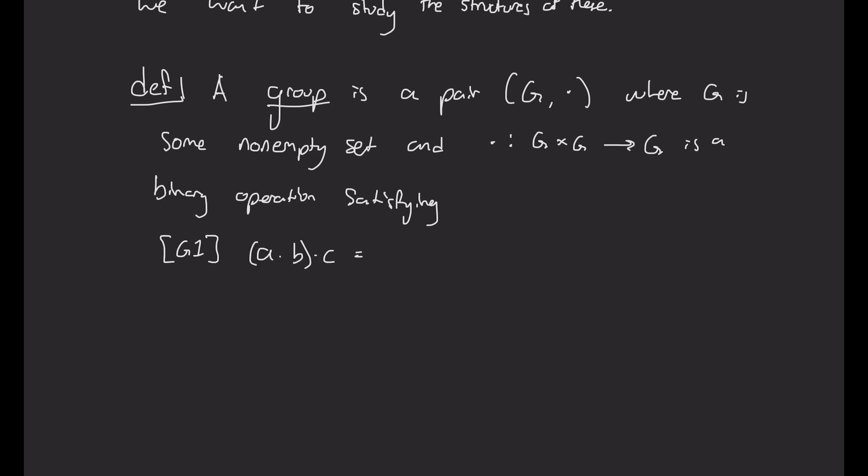And we want this to satisfy a few properties. First property is associativity, which says that if I multiply A times B and then C, that should be the same as multiplying B times C and then A. Second property is that there is some E in G, there's some unit, such that when I multiply anything by it, it kind of just vanishes. It doesn't do anything with respect to my binary operation. And lastly, we want that for any element A in G, there is some inverse element, A inverse, such that when I multiply A and its inverse in either order, I get back to this unit element E.